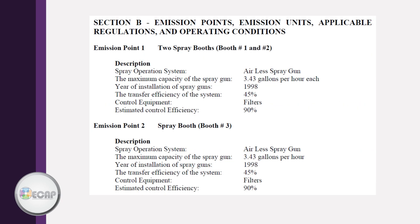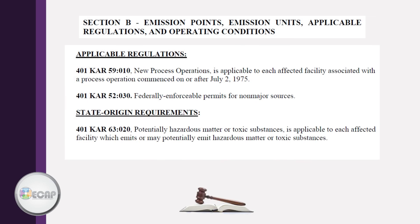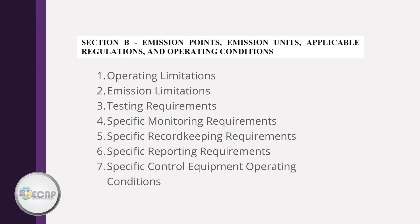This is Section B. It labels each emission point or emission unit, provides a description, and may indicate rated capacities, control equipment, and efficiencies. If you have several emission points that are similar, the permit may group the requirements instead of listing them for each point. In Section B, the applicable regulations are referenced for all emission points. The Section B for each emission point is then broken into seven parts, and the way these are referenced may vary between facilities due to differences among operations and sources.